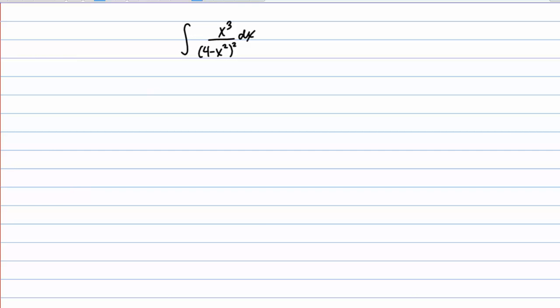Let's take a look at this integral together. We have the integral of x cubed over the quantity 4 minus x squared, squared, dx. We suspect this integral could be a good candidate for trig substitution because we see the quantity 4 minus x squared, which has the form A squared minus U squared. So let's try using trig substitution and see if it's going to help us.